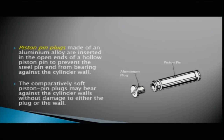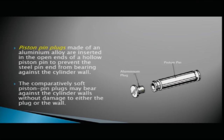On the sides of the piston you have piston pin plugs made of aluminium alloy, inserted in the open ends of the hollow piston pin to prevent the steel pin from bearing against the cylinder walls. These comparatively soft plugs may bear against the cylinder walls without damage to either the plug or the wall.